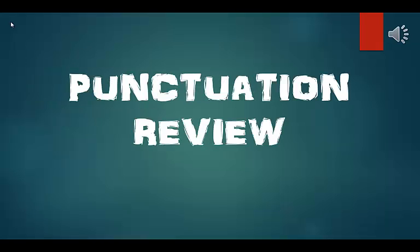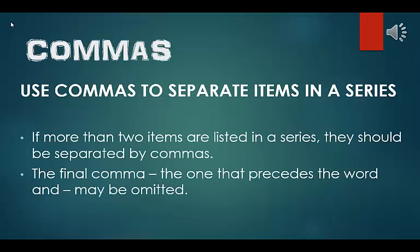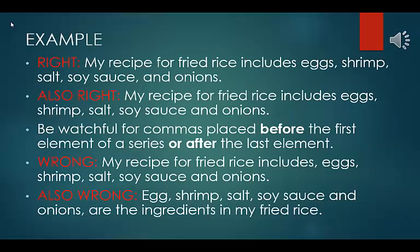Now let's start with punctuation. Commas. We use commas to separate items in a series. If more than two items are listed in a series, they should be separated by commas. The final comma — the one that precedes the word AND — may be omitted. Example: my recipe for fried rice includes eggs, shrimp, salt, soy sauce, and onions.